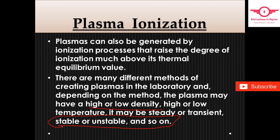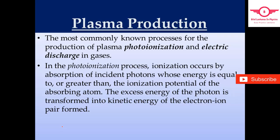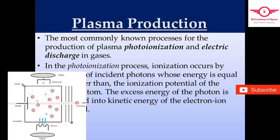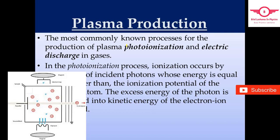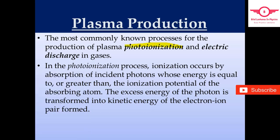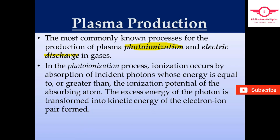Whether the plasma is stable or unstable, different state types can be used to produce plasma. There are two most common ways to produce plasma in the laboratory: photo ionization and electric discharge.